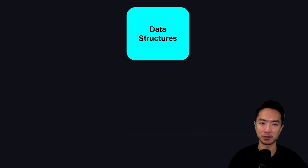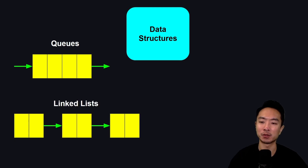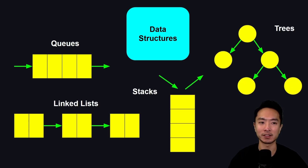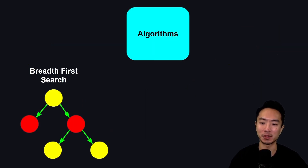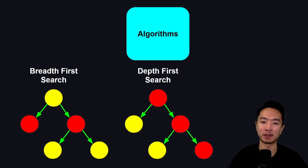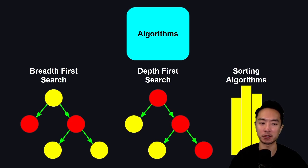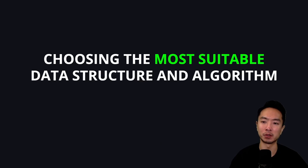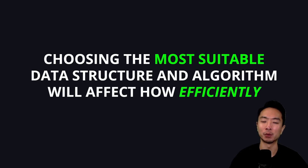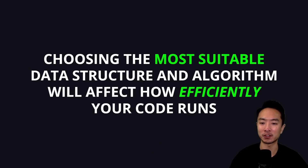With data structures, there are a bunch of different options — you have queues, linked lists, stacks, and trees. With algorithms, you have things like breadth-first search, depth-first search, and different sorting algorithms. The idea is that choosing the most suitable data structure and algorithm will affect how efficiently your code runs.